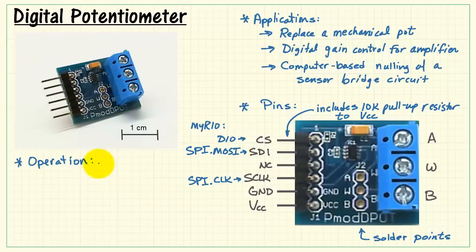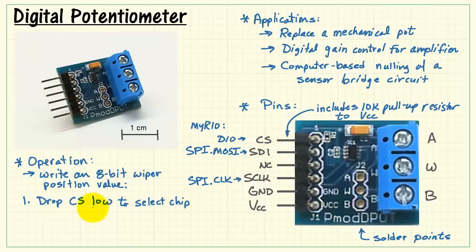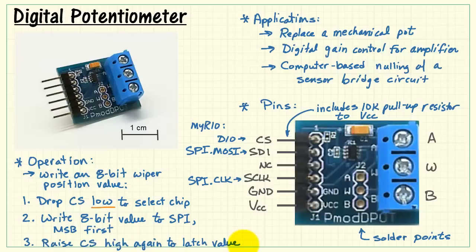Now here's how you write the 8-bit value into the device. First, the chip select line, which is normally being pulled high or set high by your digital output, we need to drop that low to select the analog devices chip. Then you write the 8-bit value to SPI, making sure that you have most significant bit first. Then you raise the chip select high again to latch that value internally inside the chip, and this sets the wiper position for the potentiometer.